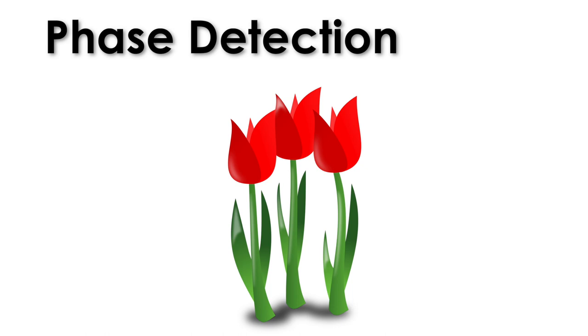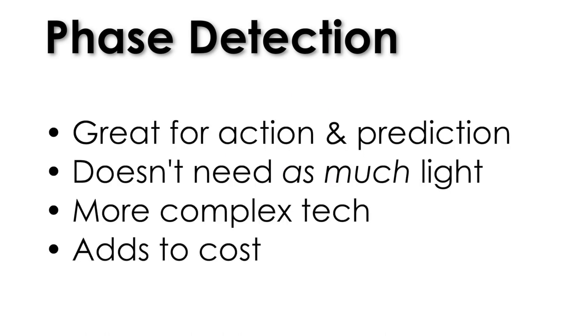And because of its speed, phase detection is great for sports photography, action, you have moving subjects. It can actually predict where to move the focus motor if something is moving towards or away from you based on how much the image is going out of phase in those points. But it does require extra technology in the camera, it requires these special prisms in front of the sensor. And based on the kind of camera that you have, mirrorless or DSLR or a top of the line camera versus a consumer camera, you're going to find different amounts of phase detection autofocus points on the camera, and it will make the camera more expensive, the more points you have.